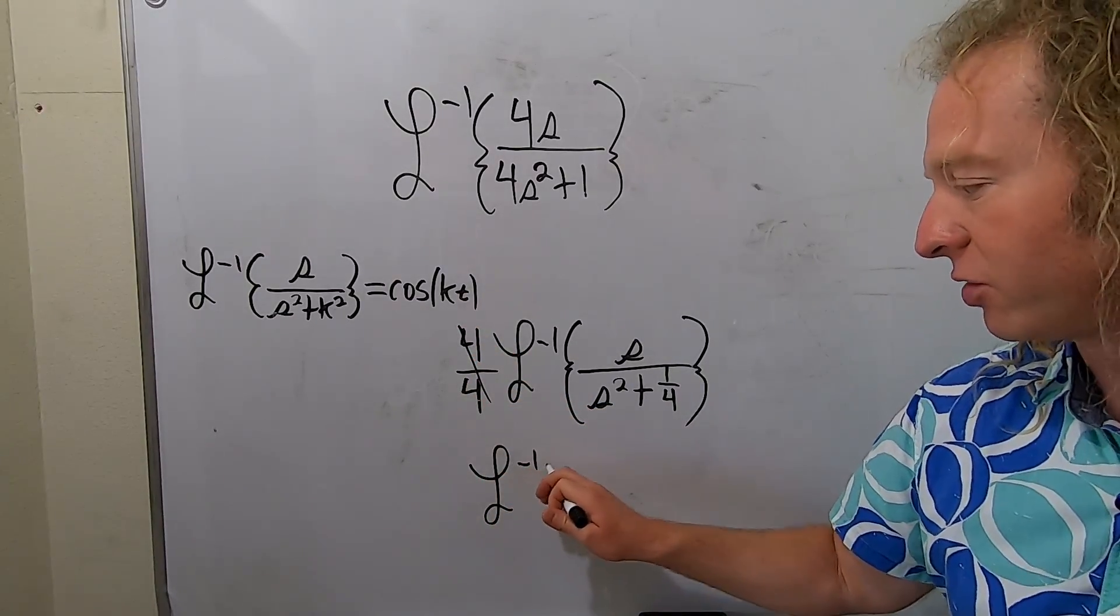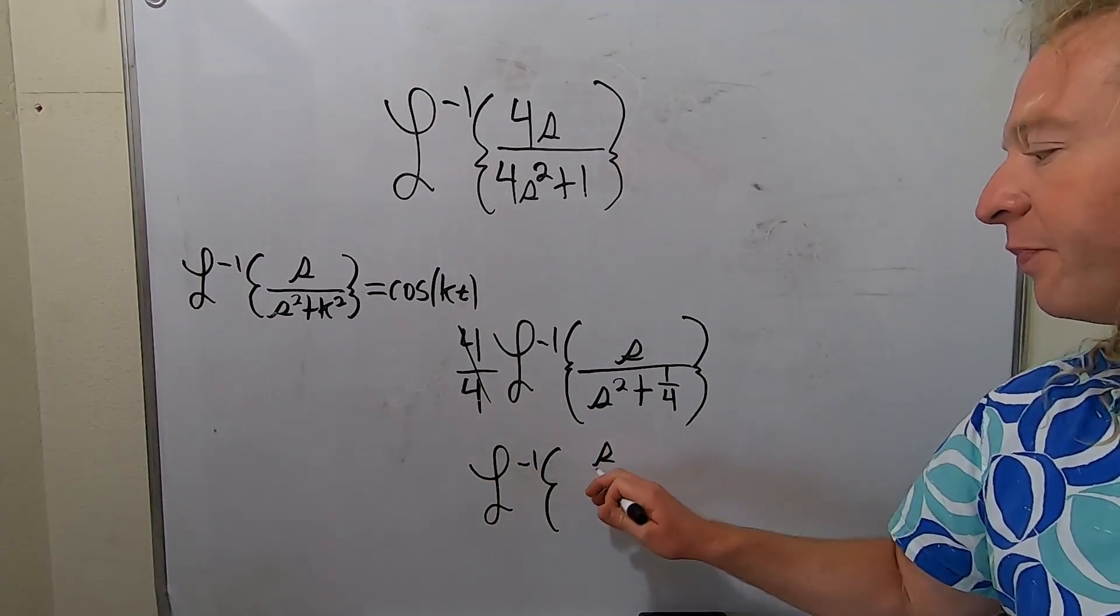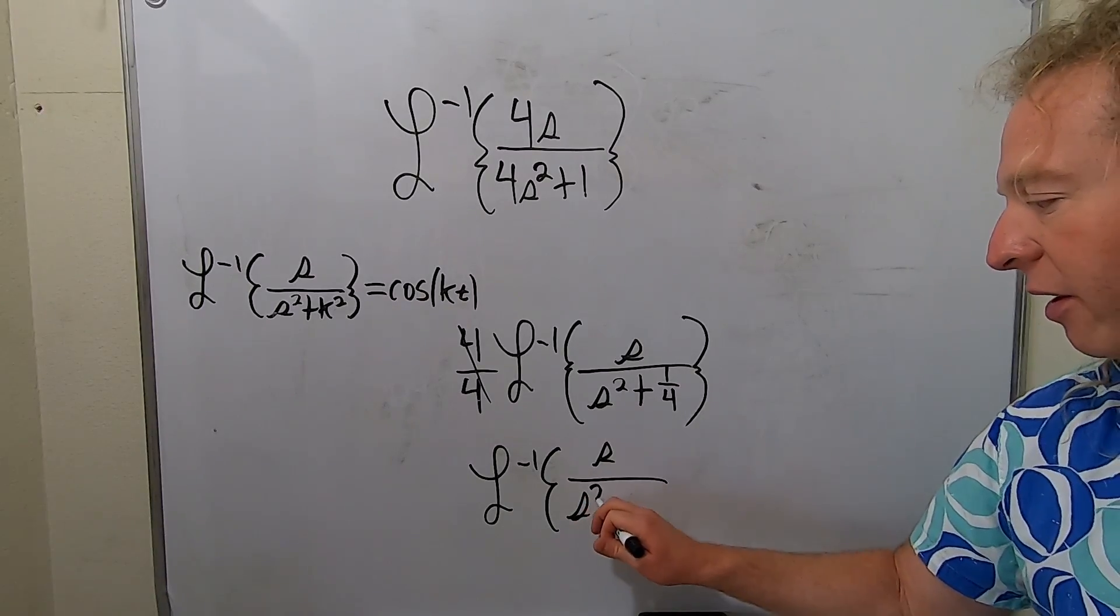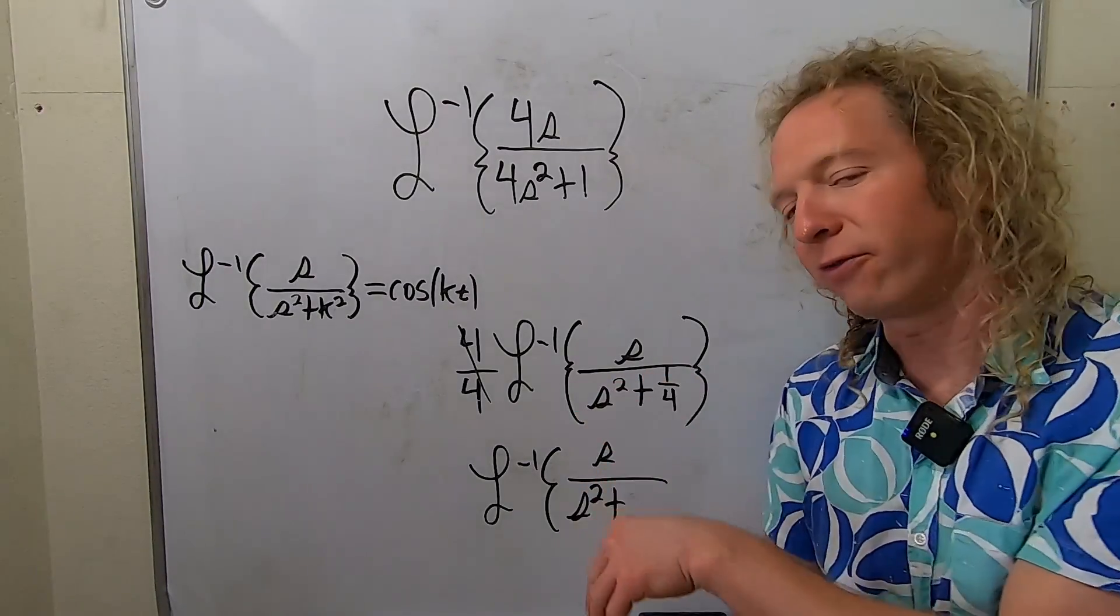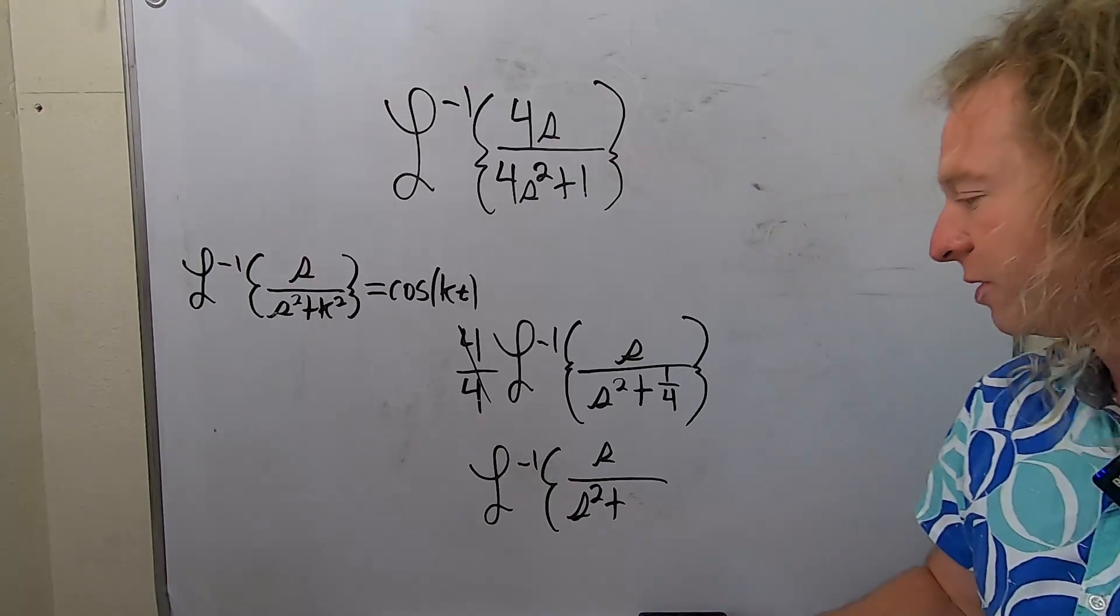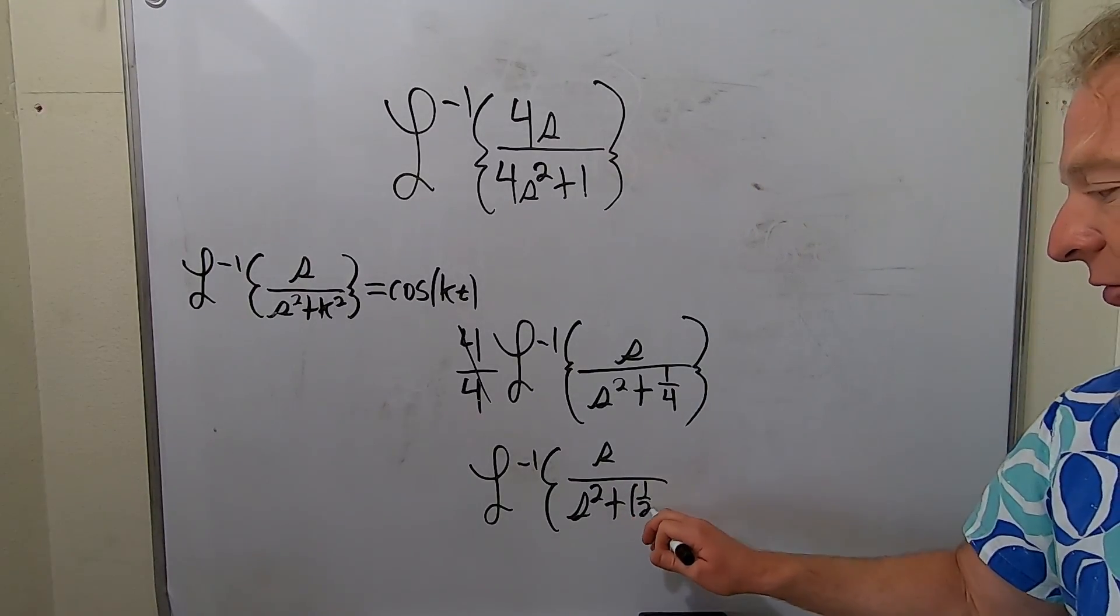So this is the inverse Laplace transform of s over s squared. Now you can rewrite your 1 fourth as k squared. That's going to be 1 half squared.